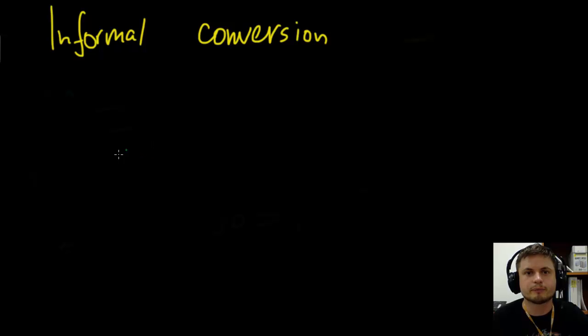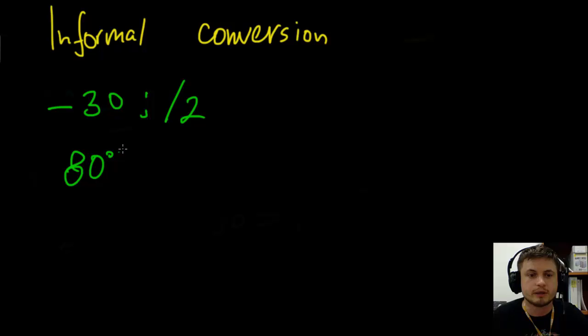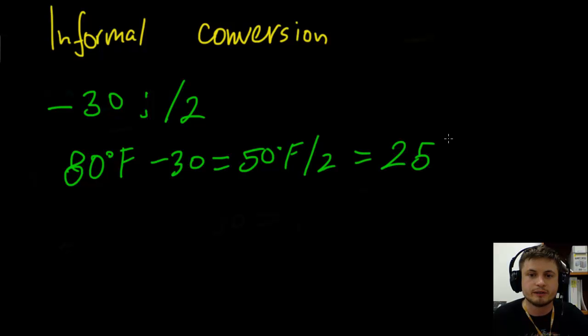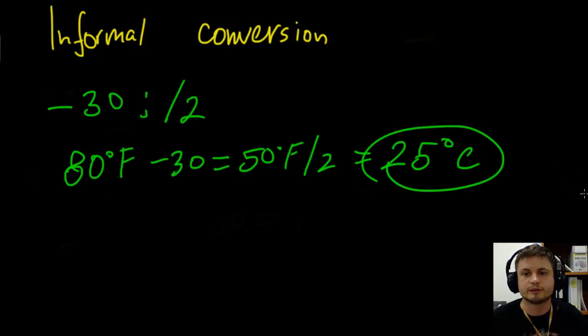However, if you're from another country and you come to US and you don't understand what temperature means, what you have to do is first you have to take away 30 and then you have to divide by 2. In other words, if you're looking at, let's just say, 80 degrees Fahrenheit and you have no idea what that means, take away 30, that's 50 degrees, and divide by 2, that is 25 degrees Celsius. So 80 degrees Fahrenheit is approximately 25 degrees Celsius. Not exactly that, but approximately that.